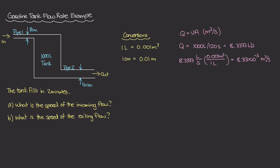The volume flow rate equals velocity times area, so we first need the cross-sectional area of pipe one. The diameter is 8 centimeters, so the radius is 4 centimeters, which converts to 0.04 meters. The area of pipe one equals π times r squared, so π times (0.04)², which gives π/625 meters squared.